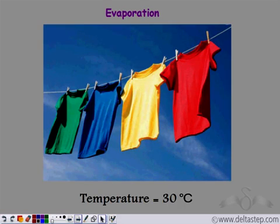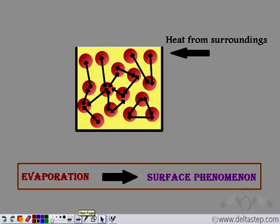How is evaporation taking place? The particles present on the surface have lesser forces of attraction compared to the particles in the bulk of the liquid. So a little heat from the surroundings increases their kinetic energy to such an extent that they overcome these forces of attraction and they escape as gas. Evaporation is a surface phenomenon — the surface particles extract heat from the surroundings and evaporate, changing into the gaseous form.